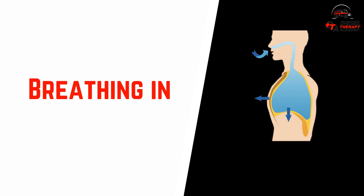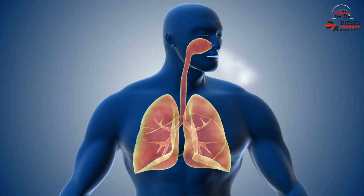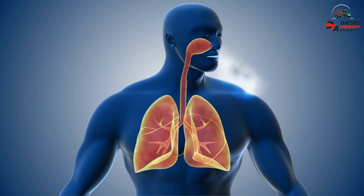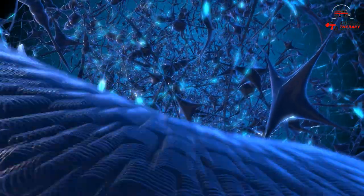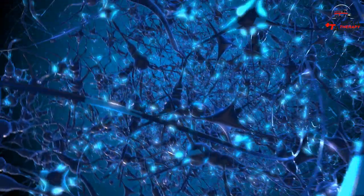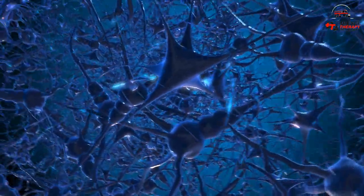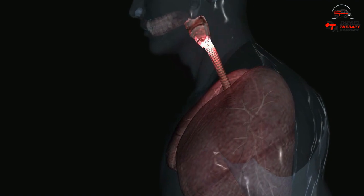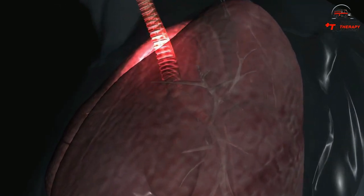Breathing in. Healthy lung tissue is springy and elastic, so your muscles need to work to expand your chest and draw air into your lungs. Signals from the respiratory center in your brain travel down nerves to your diaphragm and other muscles. The diaphragm is pulled flat, pushing out the lower ribcage and abdomen.